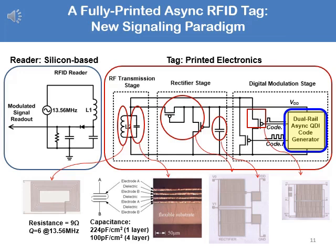As a simple system example, let's consider an RFID tag. What we propose is to replace the code generator with an asynchronous approach. We normally expect consistent timing, but because we are printing the transistors, variations can be very large. The printed parts include the coil, transmitting and receiving coil, capacitors, TFTs, and our code generator.